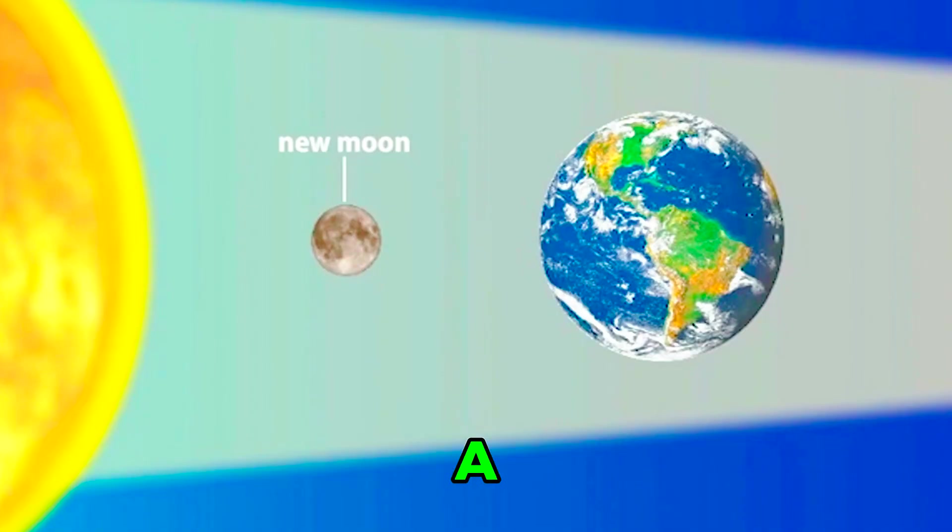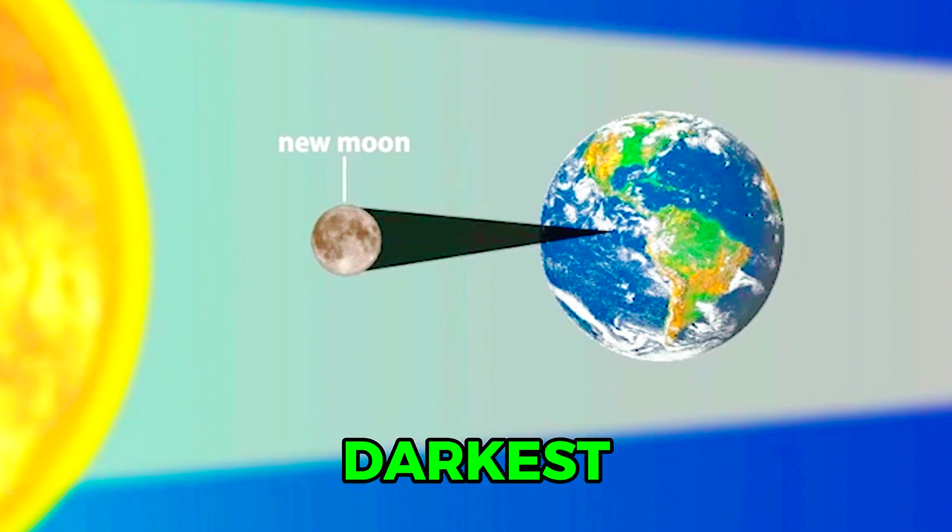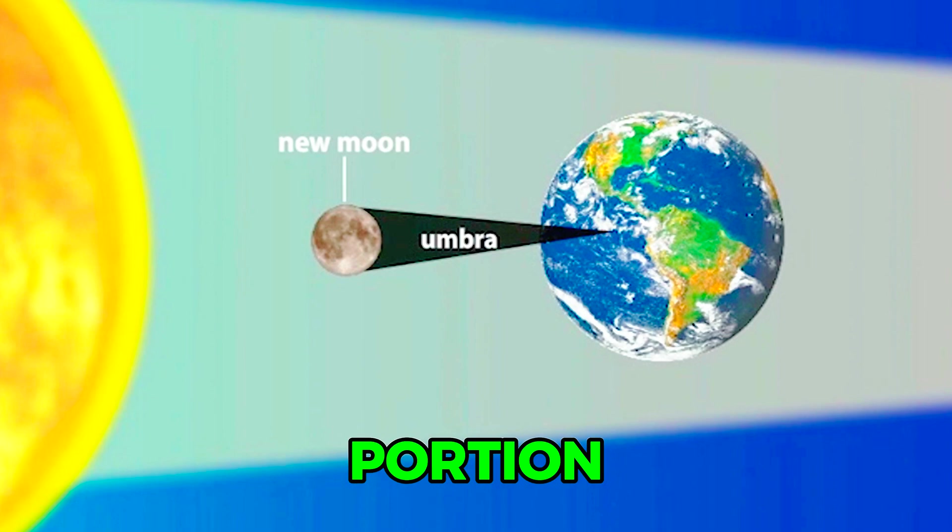During a solar eclipse, the Moon will cast the darkest part of its shadow, called its umbra, on a small portion of the Earth. Only these locations will experience a total solar eclipse.